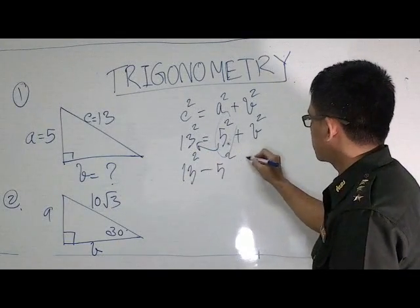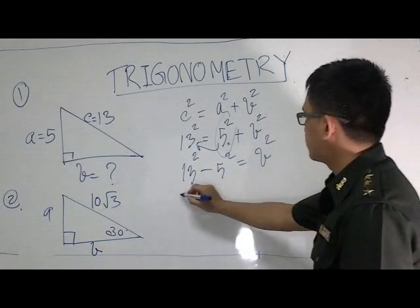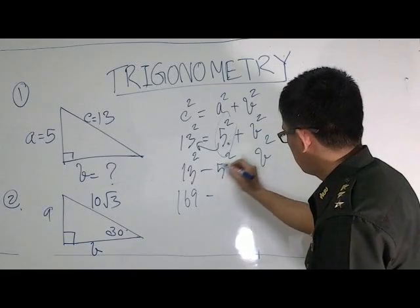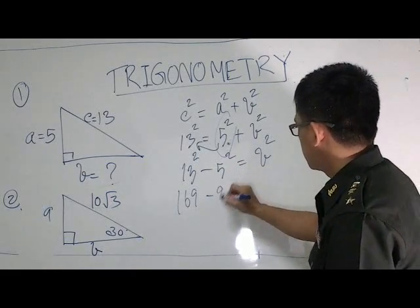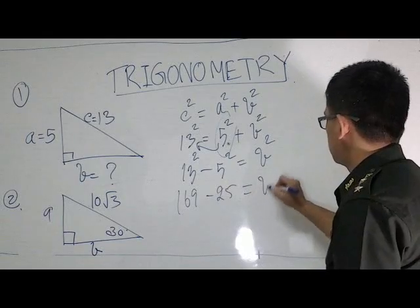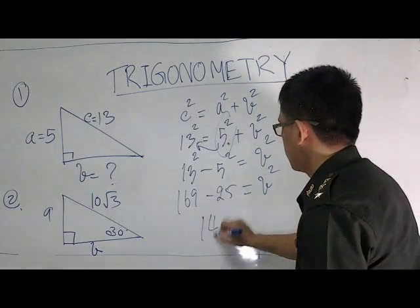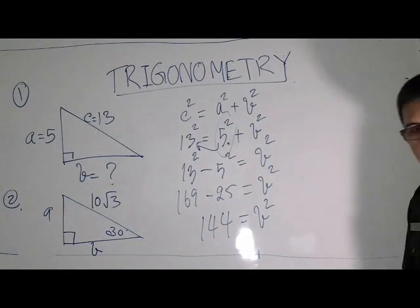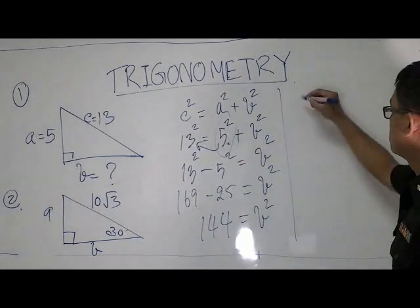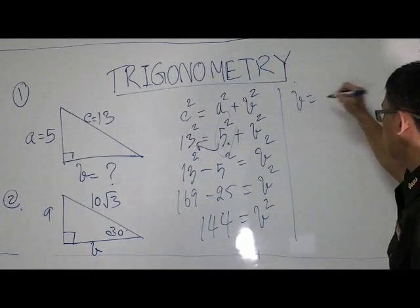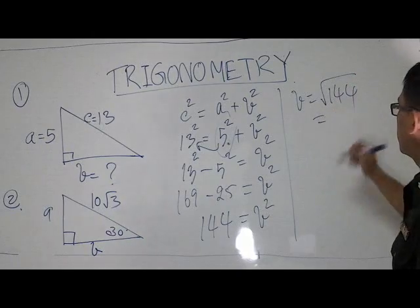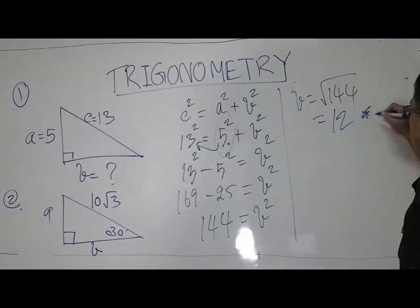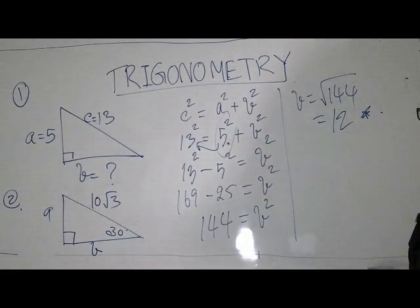C squared equals A squared plus B squared. Don't forget to take the square root of B squared. This is the answer.